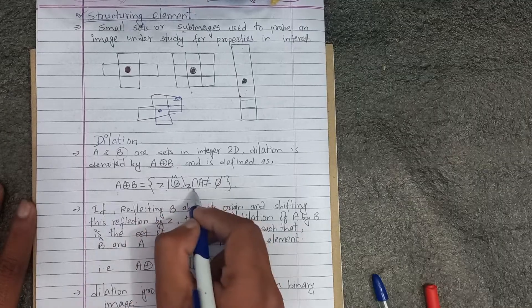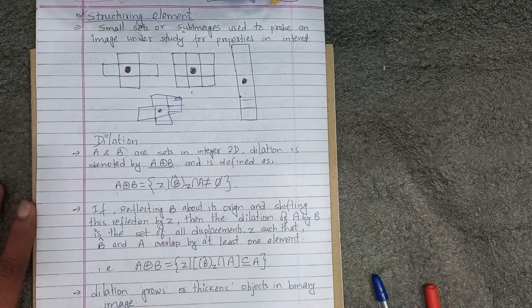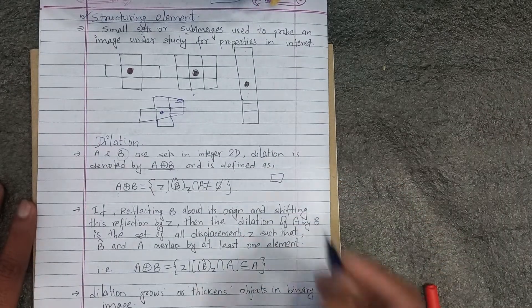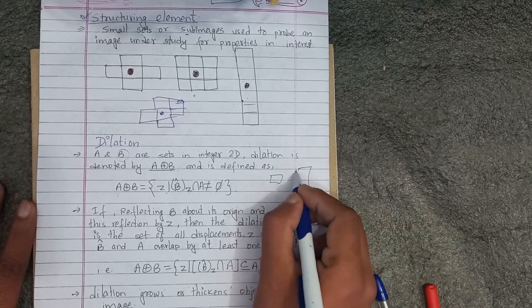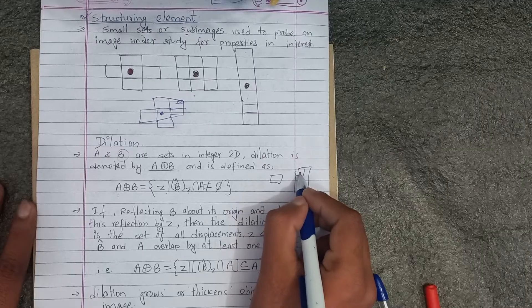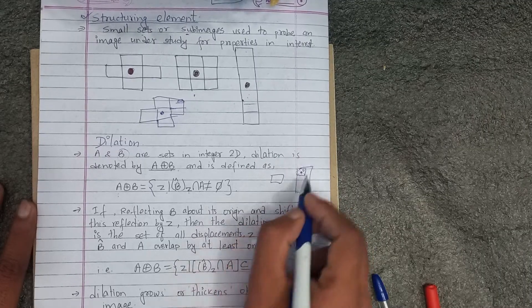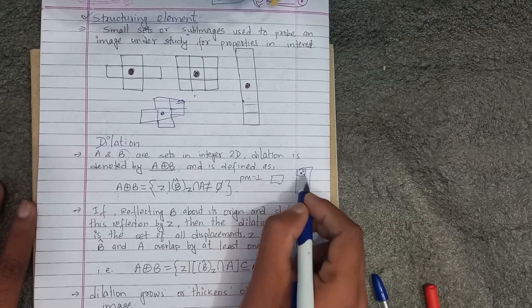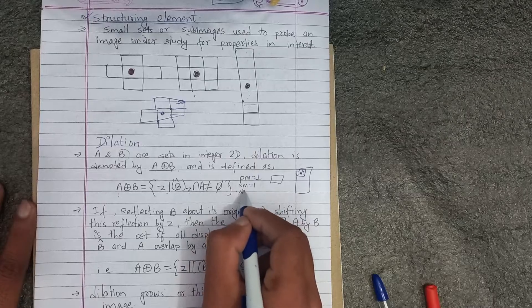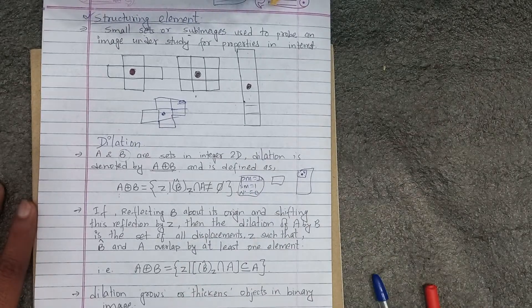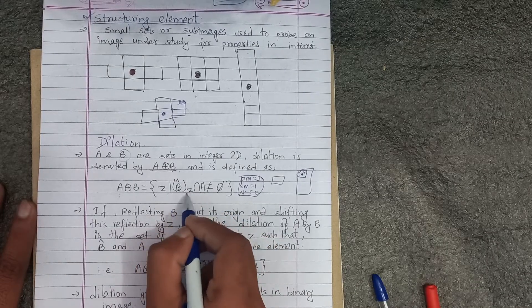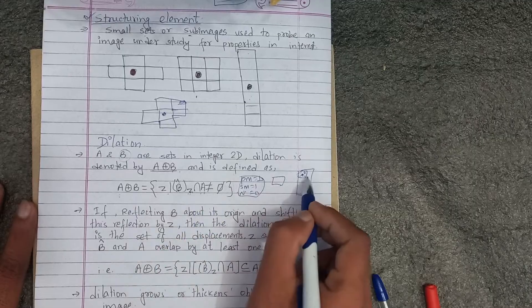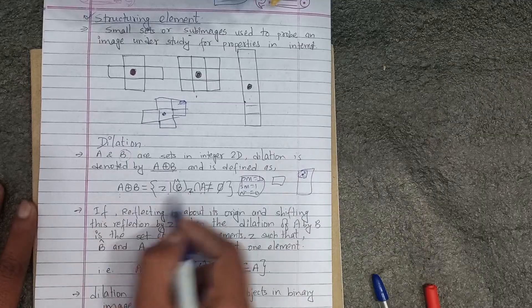Reflected B translated by Z and A intersection A has an empty set. How do we define this? To translate a symbol, this is the image. The structuring element is the value. How do we find the intersection? So, reflected B is translated by Z, this is a sum. Intersection with A should have at least one element. If not, the element common is dilation, okay?